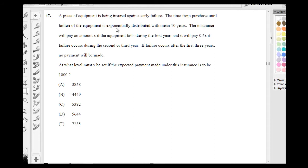The insurance will pay an amount of X if the equipment fails during the first year, and it will pay half of X if the failure occurs during the second or third year. If failure occurs after the first three years, no payment will be made.